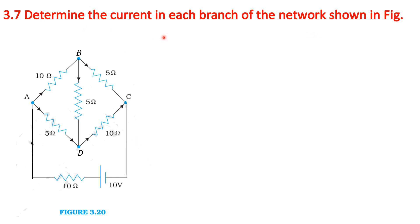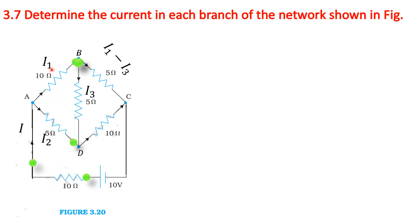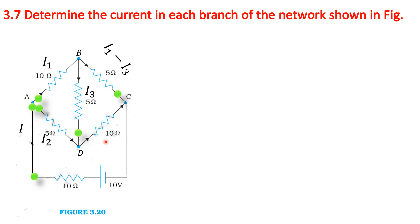To determine the current in each branch of the network, first we have to assign the current distribution. Let us consider the total current is I. When it reaches junction A, it splits into I1 and I2. From branch B, I1 is split into I3 and the balance current passing across BC as I1 minus I3. From junction D, I2 and I3 combine and pass across DC as I2 plus I3.